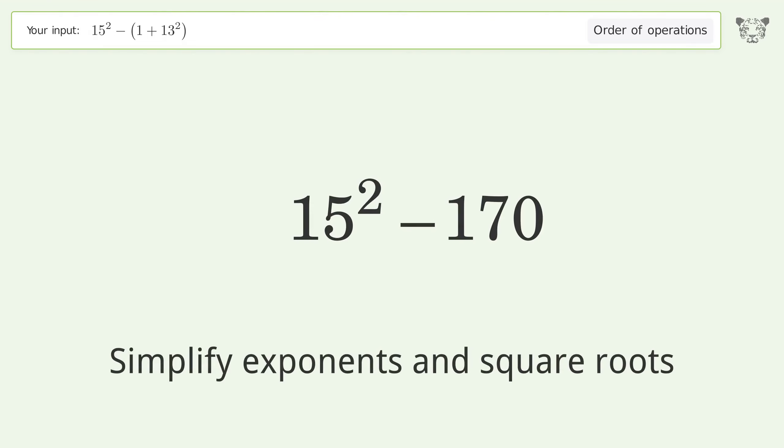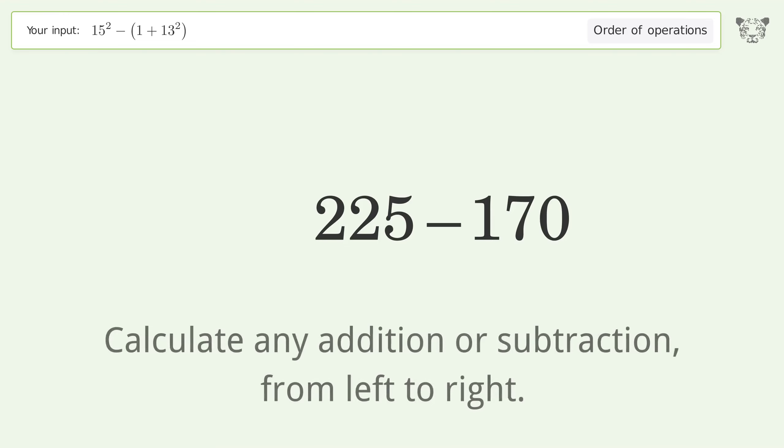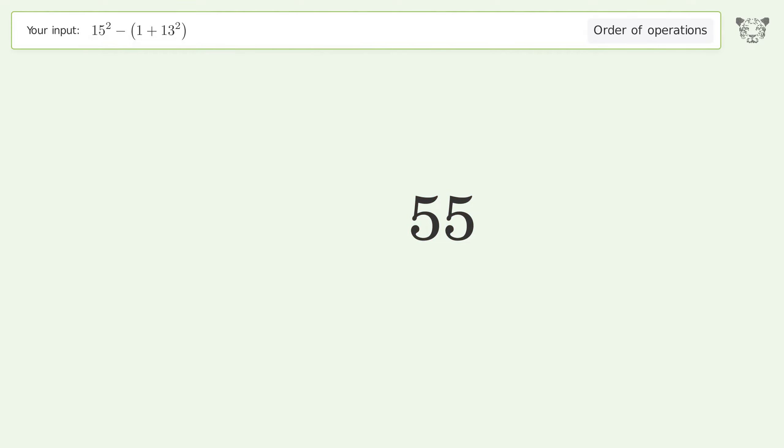Simplify exponents and square roots. 15 to the power of 2 equals 225. Calculate any addition or subtraction from left to right. 225 minus 170 equals 55. And so the final result is 55.